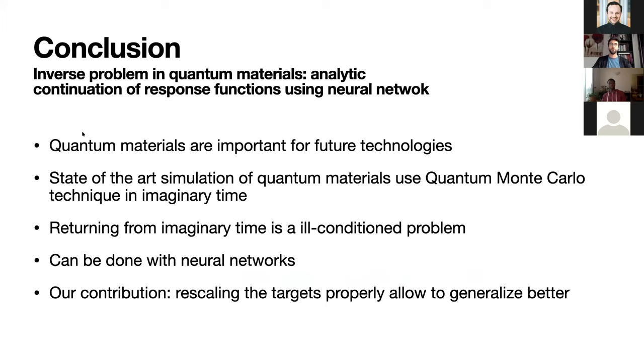To conclude, let me summarize. Quantum materials are an important part of the future for technologies. The state-of-the-art simulations for quantum materials use sophisticated quantum Monte Carlo techniques in imaginary time. The problem is that returning from imaginary time is a very ill-conditioned problem, a very hard problem. This can be done with neural networks, but rescaling the targets properly will allow to generalize better and improve the performance of your neural networks, whatever the architectures you take. That's it for my presentation. Thank you for your attention and I will now take questions.